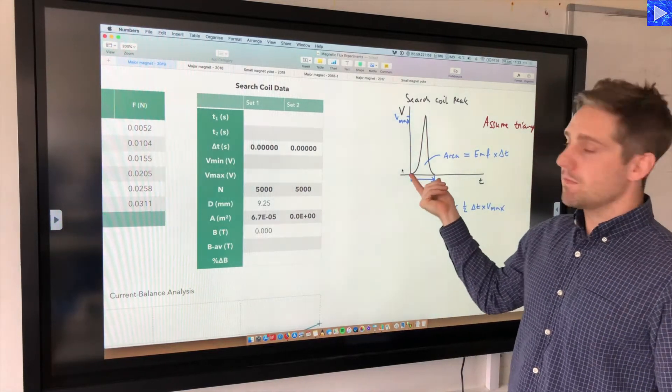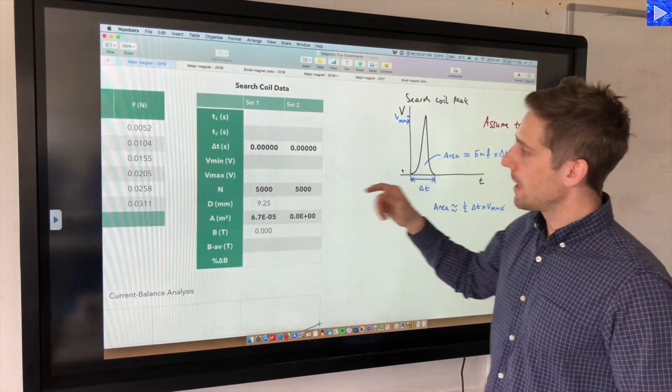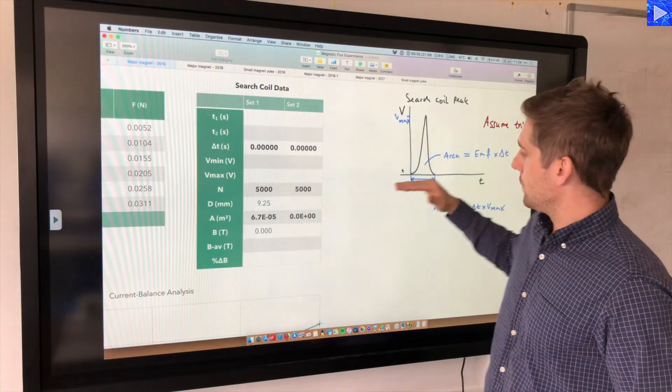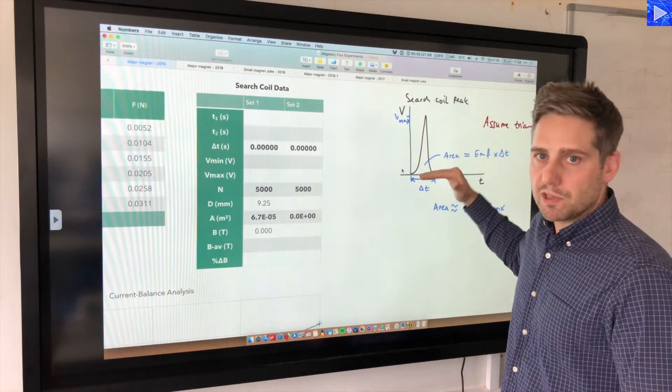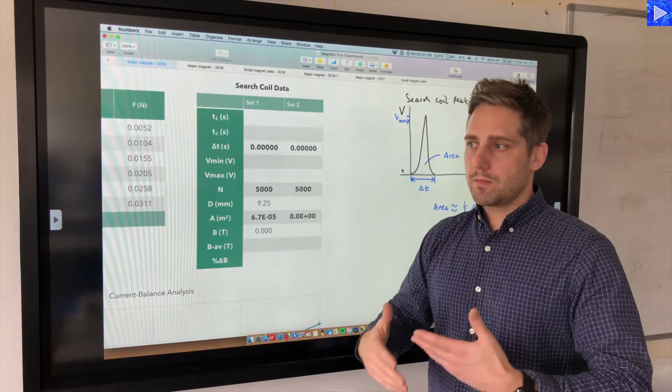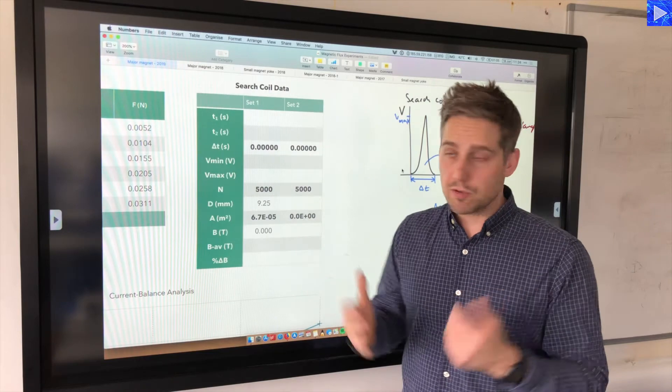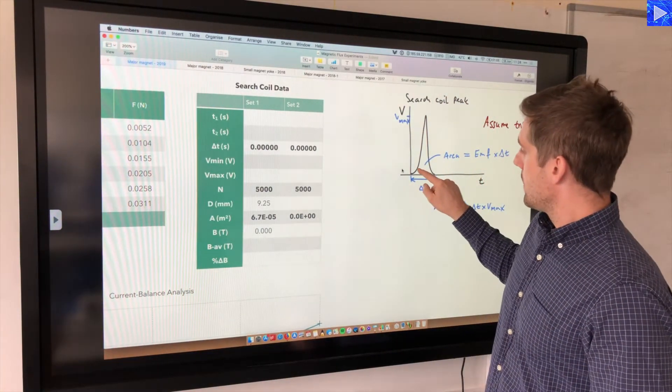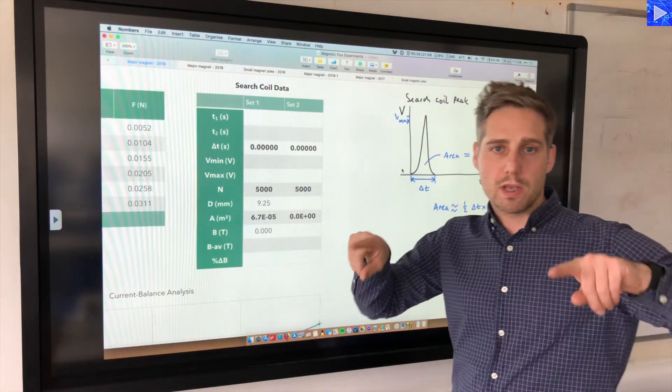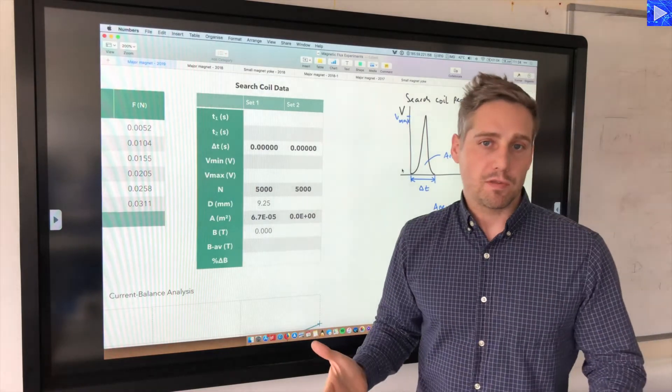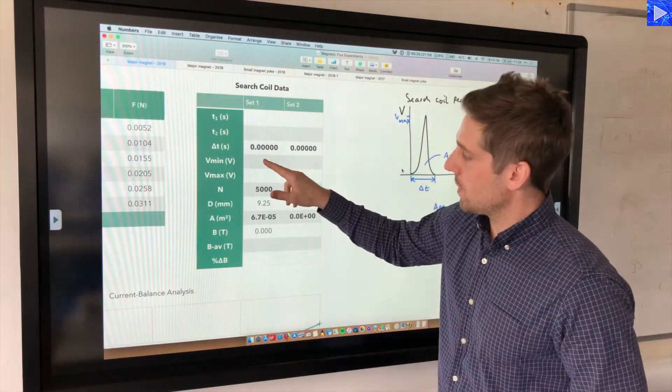So that's just simply that take away that. Then I need to write down what my minimum voltage is—what voltage was it increasing from. I'm going to exclude the very bottom of the peak where you've got quite a lot of curvature so that I get a better estimate of a triangle.